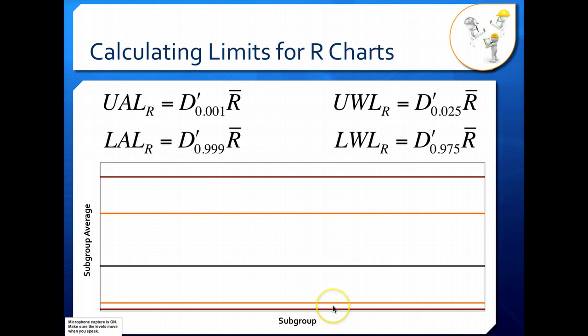For practical purposes, the lower warning limit and the lower action limit for range charts is sometimes just set to zero. Because if you think about it, the lower your variation, your process is, the more consistent it is. And that's a good thing. So you don't necessarily want to take action when you're near your lower warning limit and your lower action limit. That can be a good thing. It means your range is very, very small.